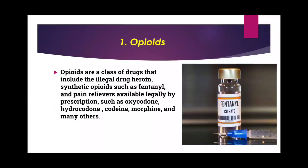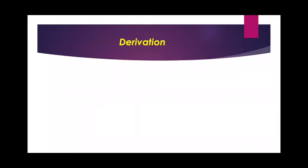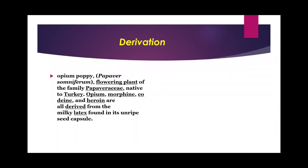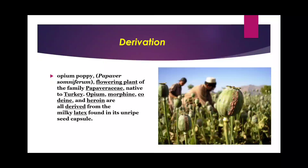Heroin is the most common illegal drug used as substance abuse from opioids. Opioids are mainly derived from a plant known as opium poppy, scientific name Papaver somniferum — a flowering plant of the family Papaveraceae, native to Turkey. Opium, morphine, codeine, and heroin are all derived from the latex present in unripe seed capsules.